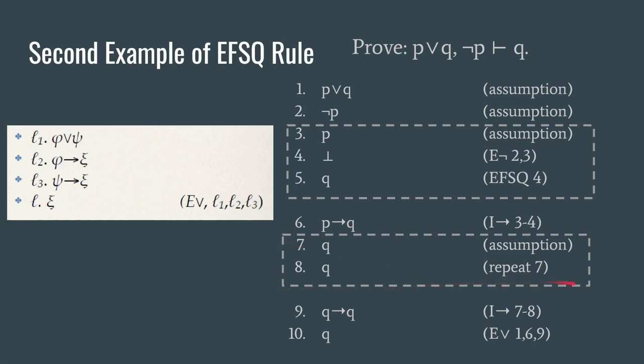So we box off those assumptions and the following derivation and we say that we've shown, look, if you assume Q then Q follows. So we have Q→Q using our introduction of the arrow rule on lines seven and eight. Well now we've got the ingredients for our elimination of disjunction.